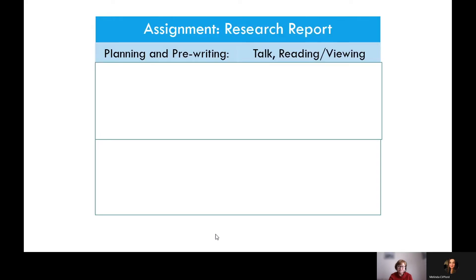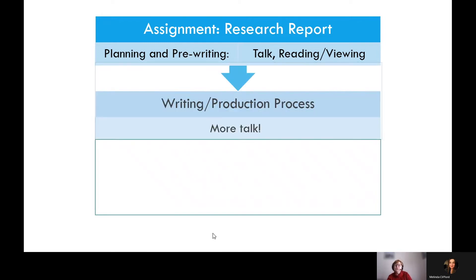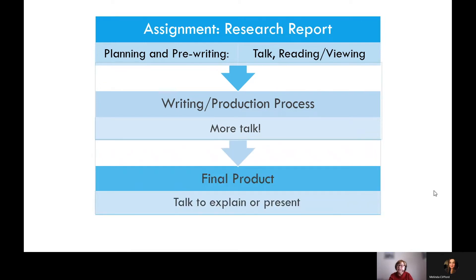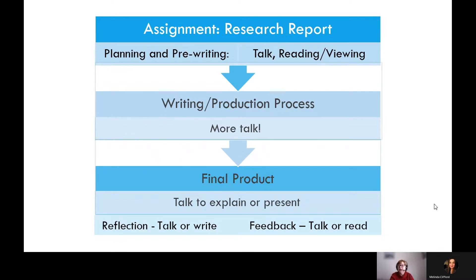For example, if you ask your students to produce a non-fiction text — maybe a research report on an area of their interest and expertise — this sounds like a writing or production task, but the planning stage will require talking, like brainstorming. Students will have to read and maybe view to see examples of the text type and understand how it's constructed. They'll need to read and view to gather information, accompanied by more discussion, talking to learn about the topic. In the writing or production process there will be more talk — asking for feedback from peers and teacher, and even more talk if collaborating. When the report is completed, it might be explained to the class or even presented orally in its entirety, followed by reflection done through talk or writing, and feedback from peers or teacher.